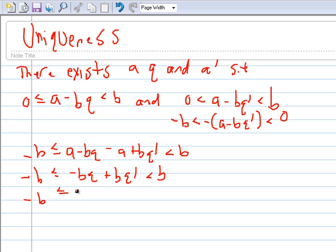So these A's cancel out and we get negative B which is less than or equal to negative BQ plus BQ prime which is less than B. We can factor out a B here, so it becomes negative B times negative Q plus Q prime which is less than B. Then if we divide by B we get negative 1 is less than or equal to negative Q plus Q prime less than 1. So this says since this is an integer and it is between negative 1 and 1 it has to be 0.